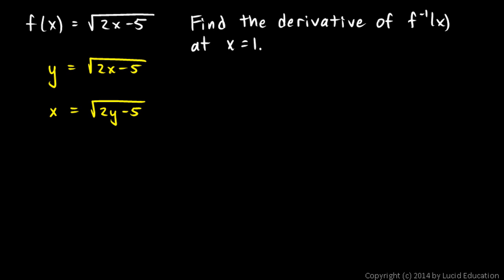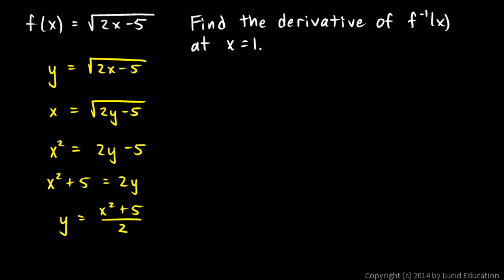To solve for y, we square both sides and get x squared equals 2y minus 5. Then add 5 to each side: x squared plus 5 equals 2y. Then divide both sides by 2, so y equals x squared plus 5 over 2. This is f inverse right here, and we want to take the derivative of that.